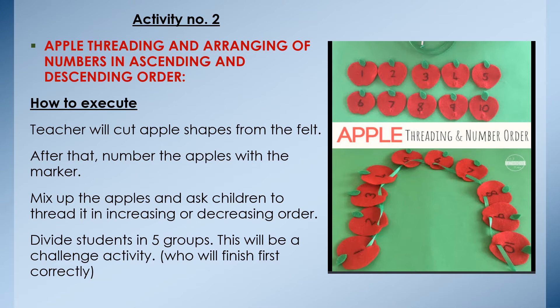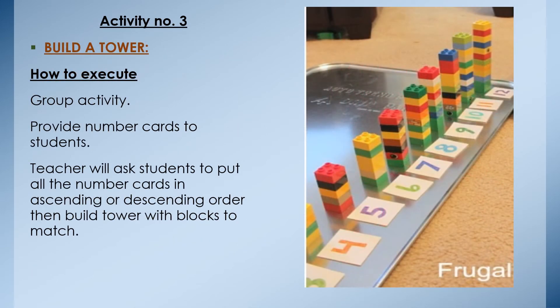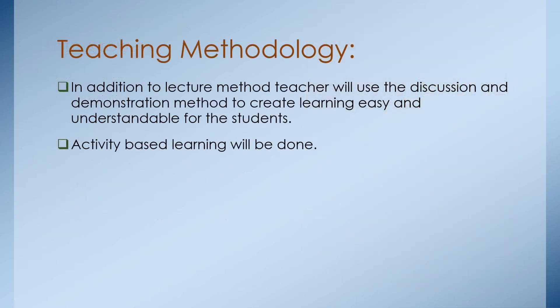Activity three: build the tower. This will also be a group activity. Provide number cards to students and the teacher will ask students to put all the number cards in ascending or descending order, then build a tower with blocks to match the steps.